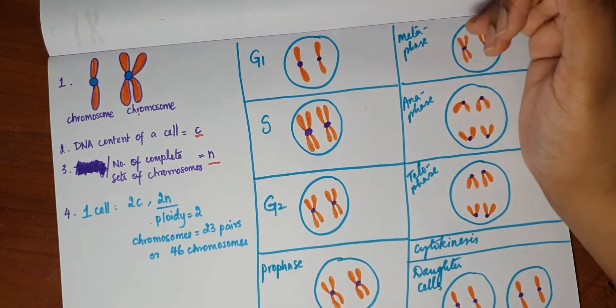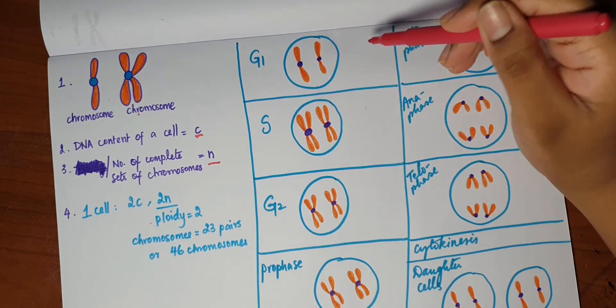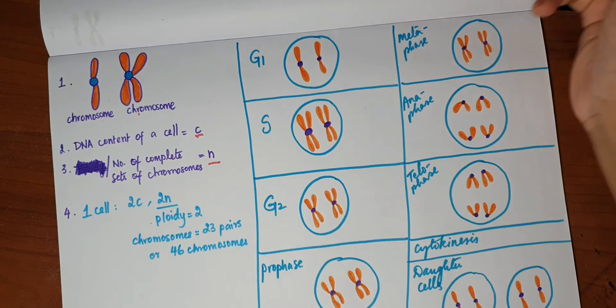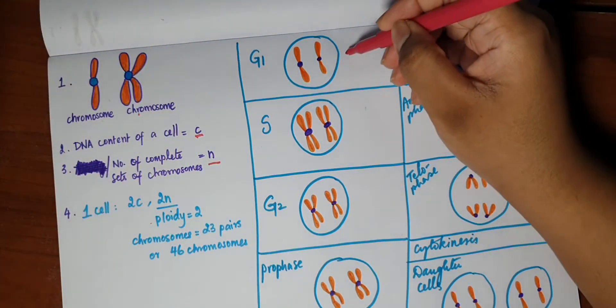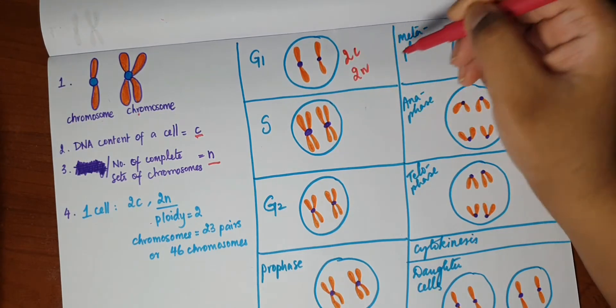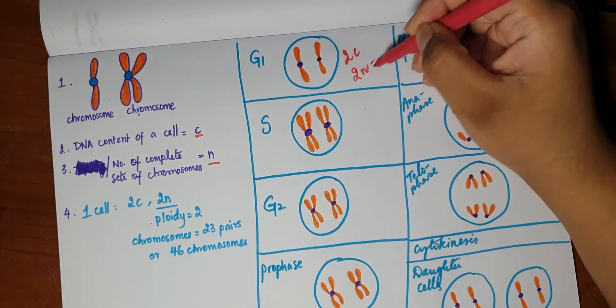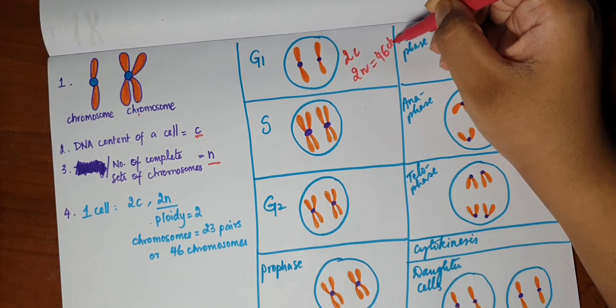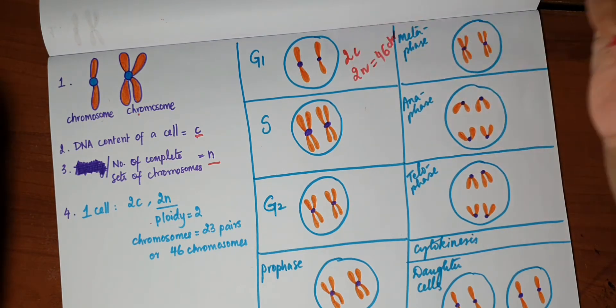So in G1, I've drawn two chromosomes but this is to represent the 46 chromosomes. So when we're starting cell division, this has 2c amount of DNA and 2n amount of chromosomes, 2n number of complete sets of chromosomes. So we have 46 chromosomes, and the amount of genetic material or DNA is 2c.